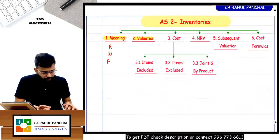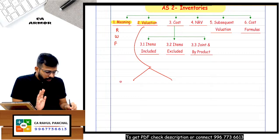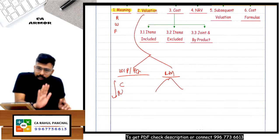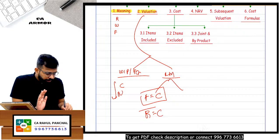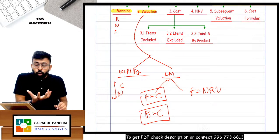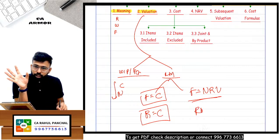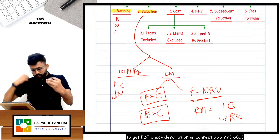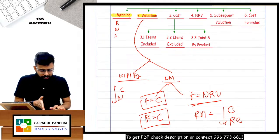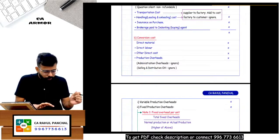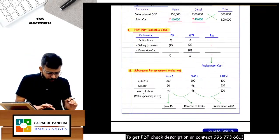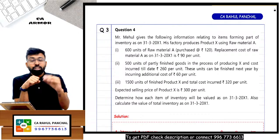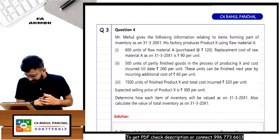Now for WIP: we cannot sell WIP directly. We have to further process it. NRV of WIP = selling price of finished goods minus further processing costs minus selling expenses. This is different from finished goods NRV which is just selling price minus selling expenses. For raw material NRV is not calculated — we directly take replacement cost. Let us now solve question number three, which covers raw material, WIP, and finished goods.